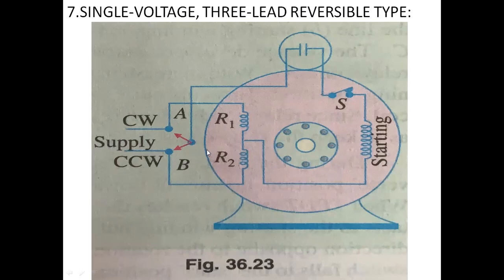When the lead of the starting winding is connected to point B, it is connected across R2. Then the current flowing through the starting winding will be reversed, and the motor will rotate in the anti-clockwise or counter-clockwise direction.